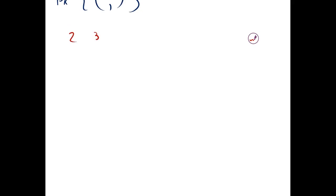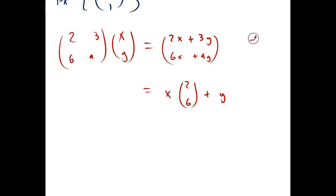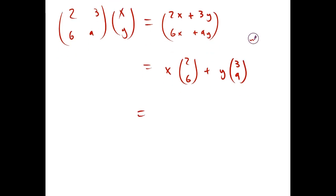The image is the set of vectors that the linear transformation maps to. That's going to be 2x plus 3y, and 6x plus 9y. We can also write it as x times the column vector (2, 6), and y times the column vector (3, 9). That means the image of A equals the span of these vectors.